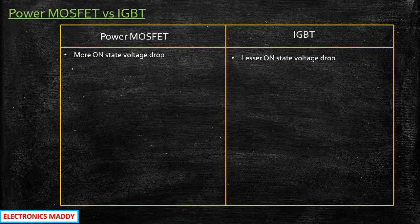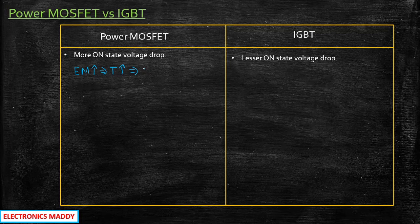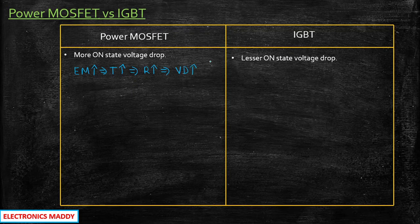When the power MOSFET is conducting, more will be the electron mobility. As the electron mobility increases, consequently the temperature will also increase. Since power MOSFET is a positive temperature coefficient device, as the temperature increases, the resistance also increases. Because of this, more will be the on-state voltage drop — so the voltage drop will be higher.